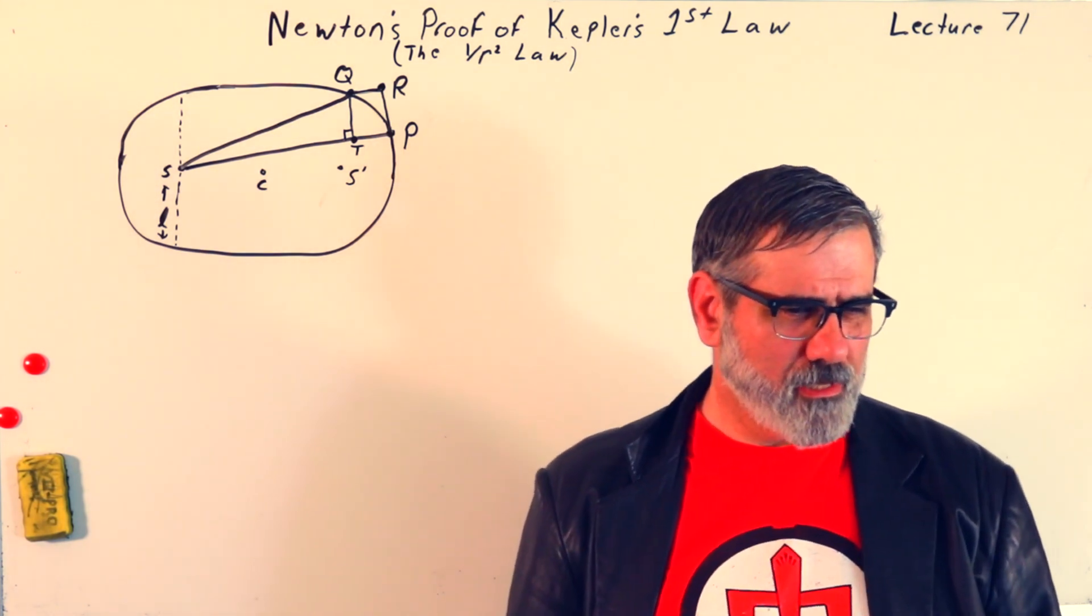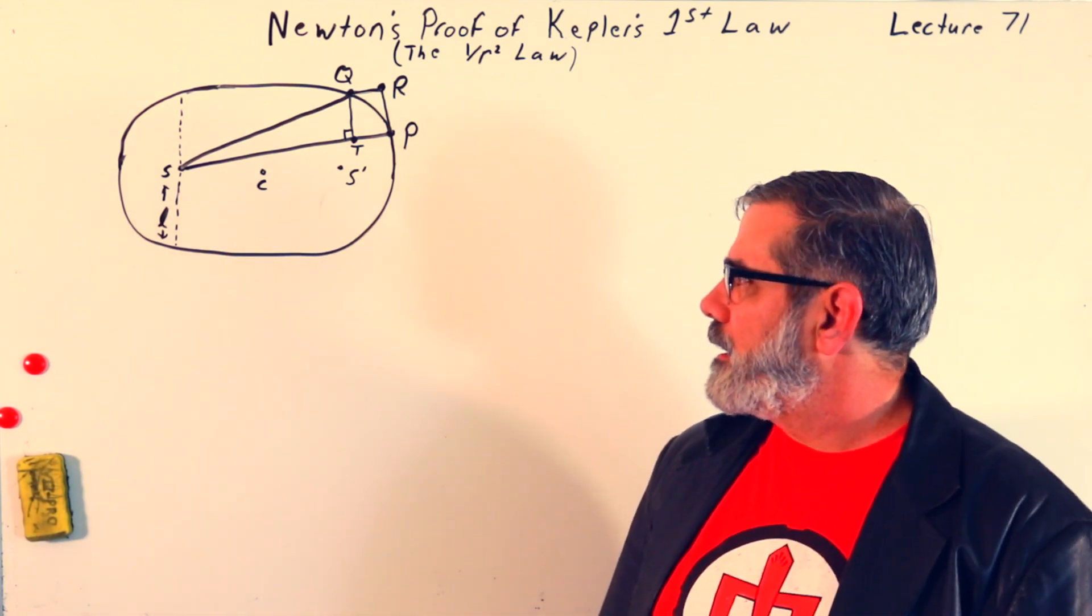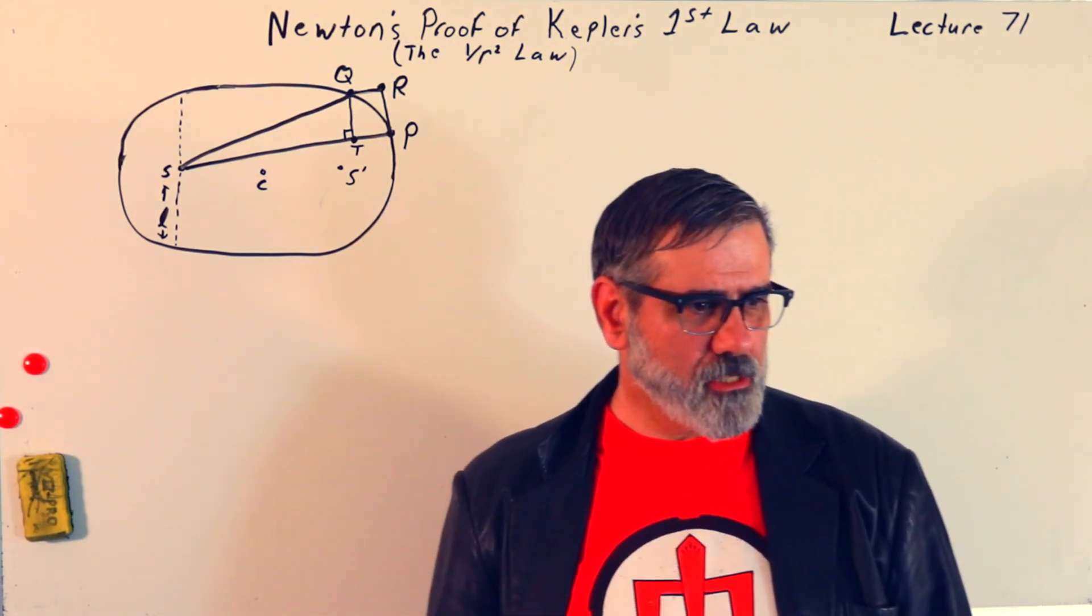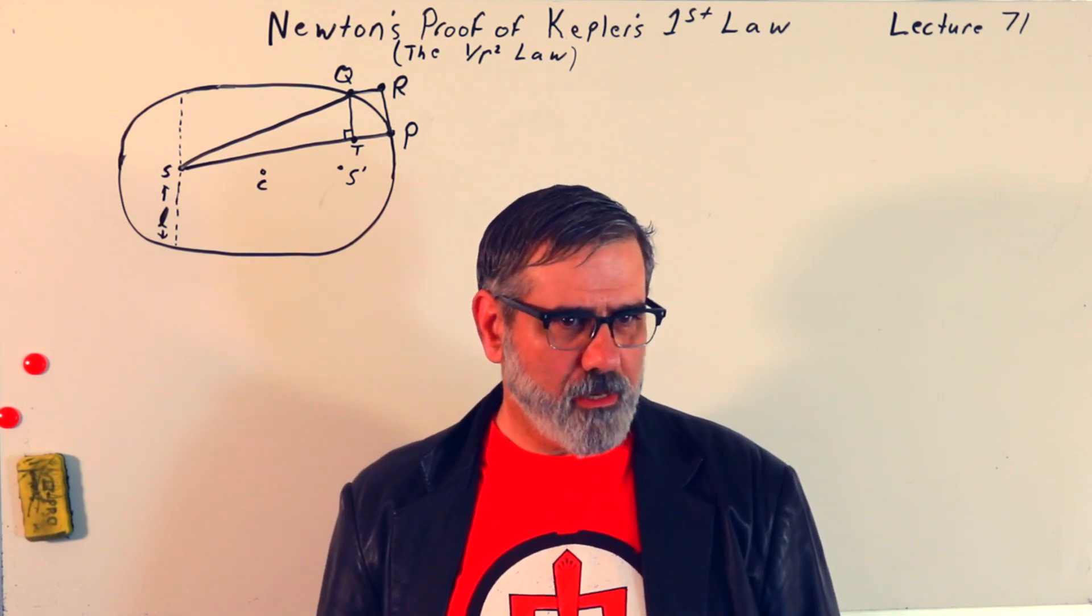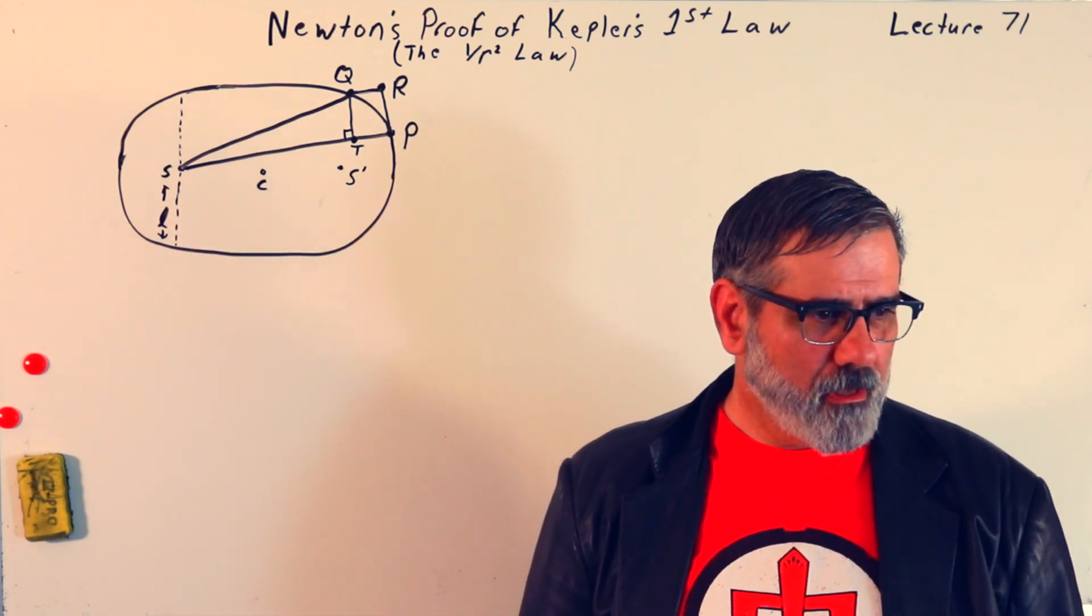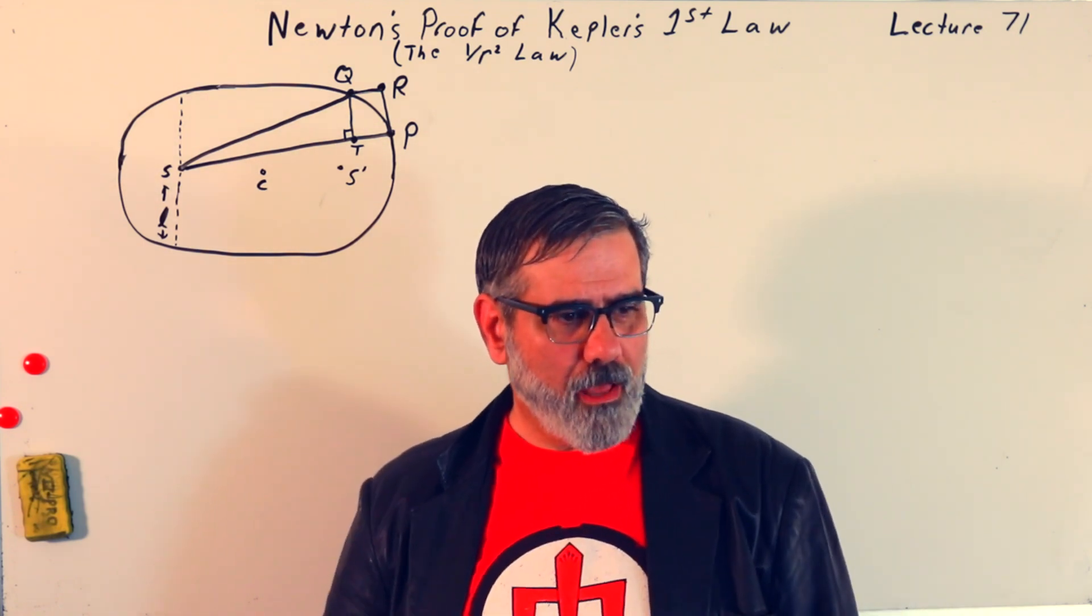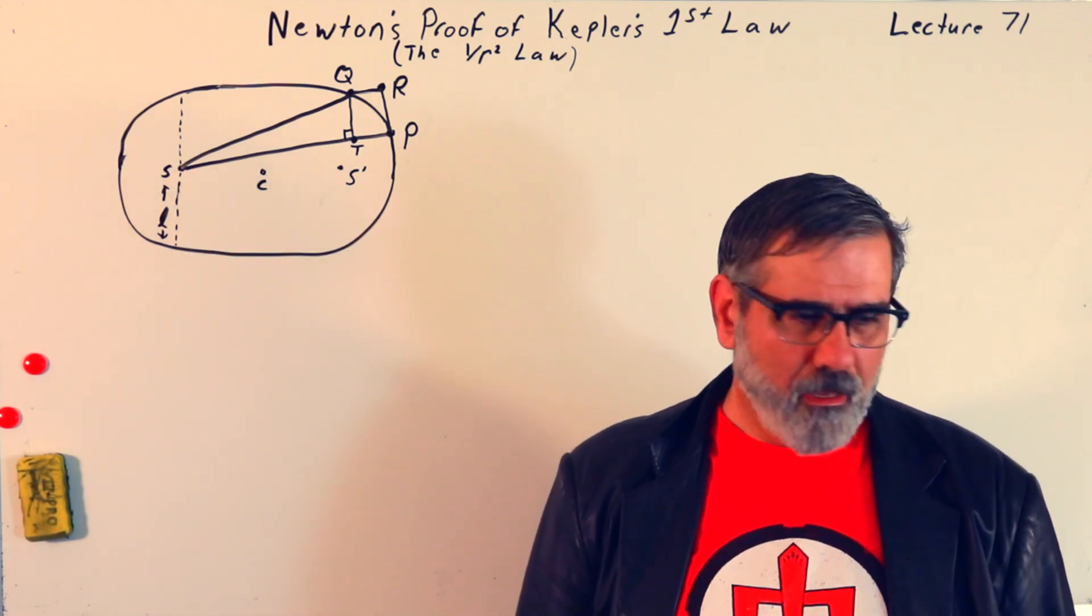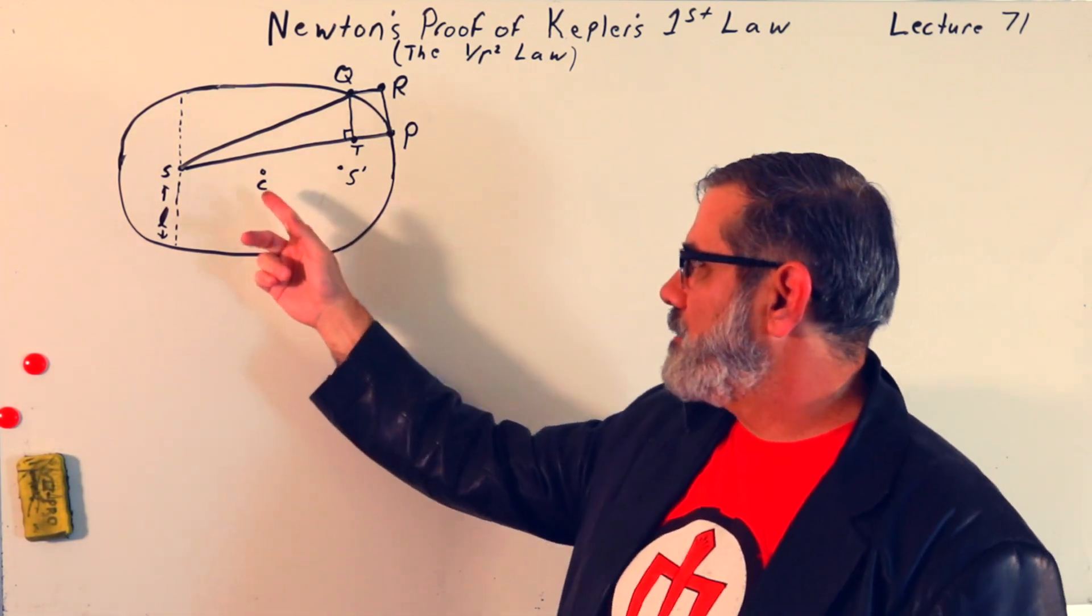So what I've done here is just a general elliptical orbit. It's a terrible ellipse, I realize, but just imagine it's a really great ellipse. S is the sun, and that's placed at one of the foci of the ellipse. You can go back to, I think it was lecture 67, where it went into some detail on the mathematics of ellipses.